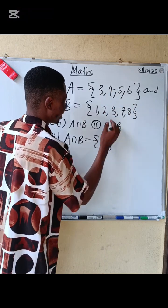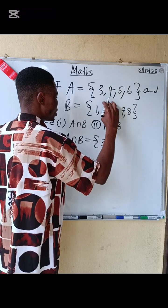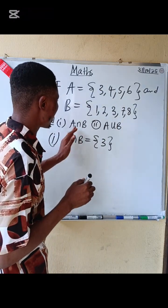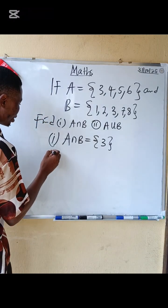So 3 is the only element that appear in A and also appear in B. Therefore, the answer to the intersection between A and B is 3.